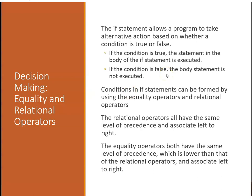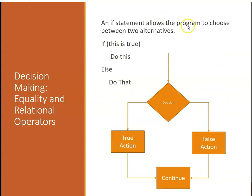Now we're going to talk about decision making. The if statement is a statement in C++ that allows a program to take alternative action based on whether a condition is true or false. If x equals 5, do this, otherwise do that. If the condition is true, the statement in the body of the if statement is executed. If the condition is false, it's not executed. There's also an else clause. Conditions in if statements can be formed by using equality operators and relational operators. The relational operators all have the same level of precedence and associate left to right. Equality operators all have the same level of precedence, which is lower than that of relational operators, and also associate left to right. An if statement allows the program to choose between two alternatives. That's called an if-else. You can also just have an if: if this is true, do this, otherwise just keep going.